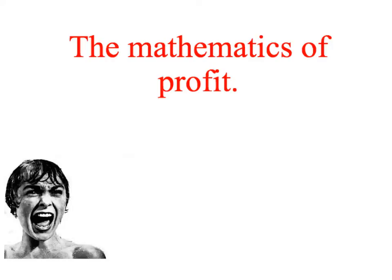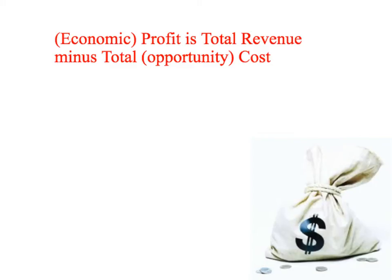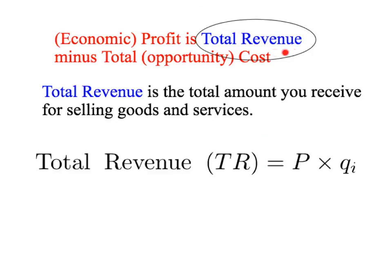To answer that question, we're going to have to look at the mathematics of profit. If you really hate mathematics, go forward a couple of presentations until we start looking at the diagrams. But if you can handle a bit of mathematics, it makes it a lot easier. Total profit, or total economic profit, is simply total revenue minus total cost — and as always in economics, we're talking about total opportunity cost.